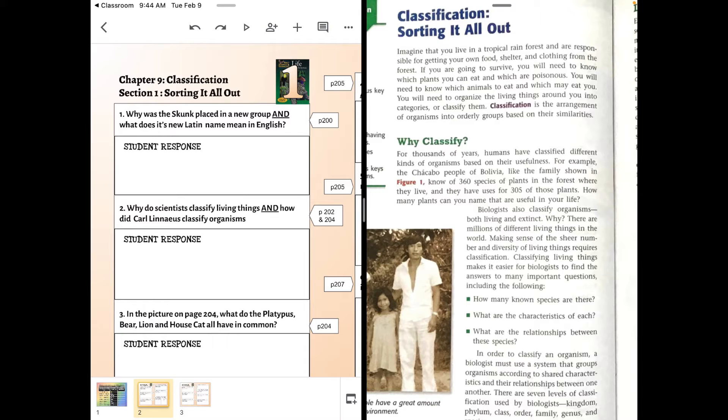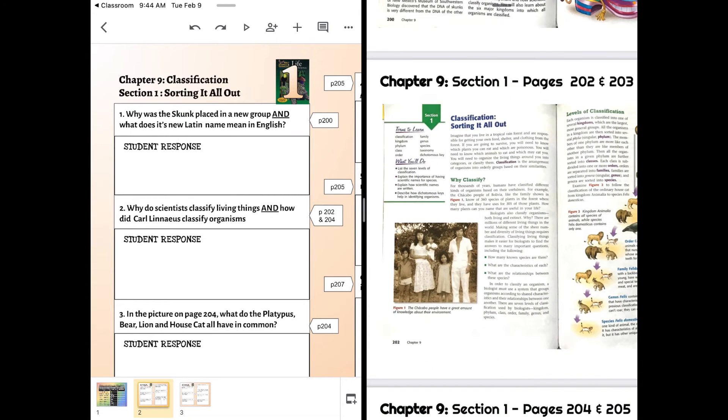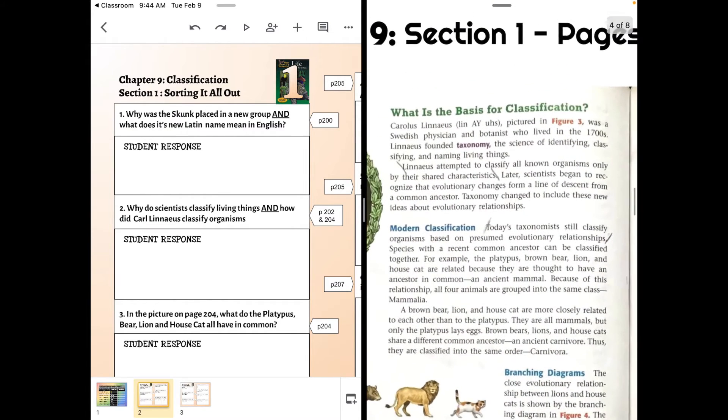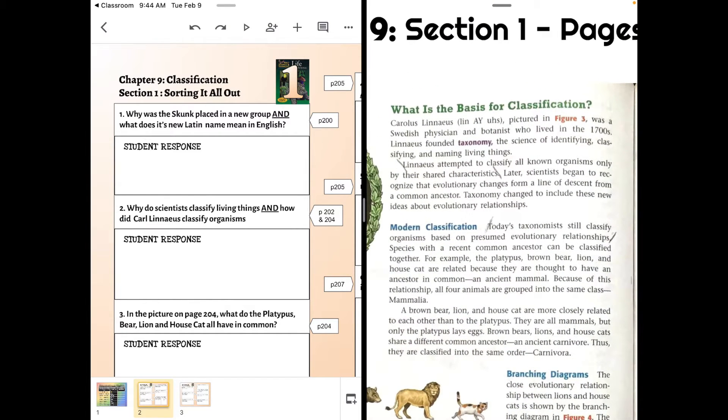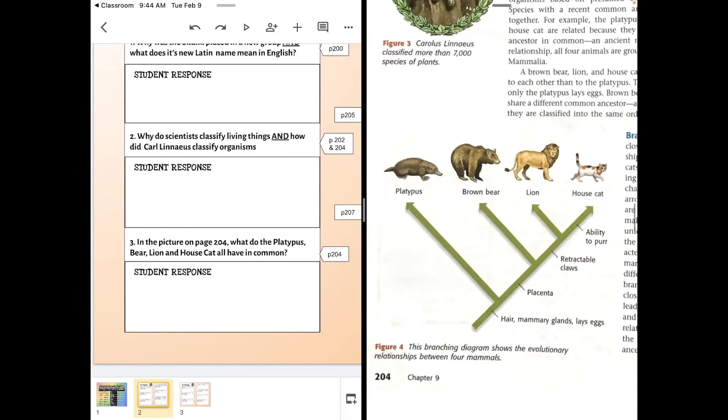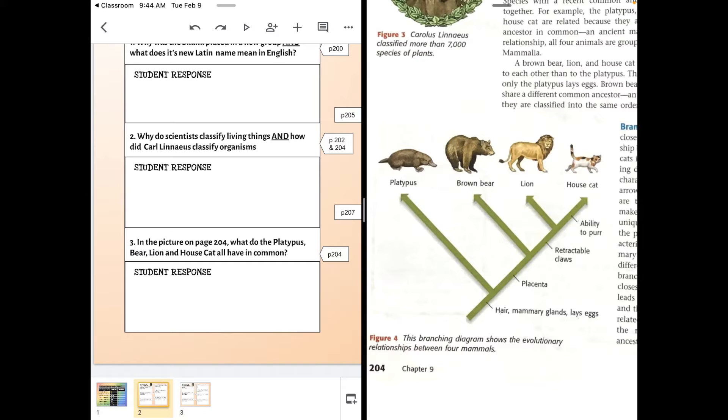And then we skip 203 because we already did our notes on that. How did Carolus Linnaeus classify living things? Then question three, in this picture we need to look at this picture and see what traits all of these organisms have in common before they start splitting off into groups.